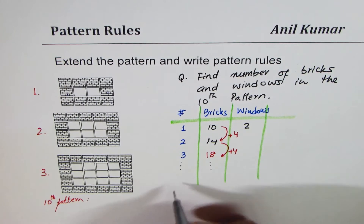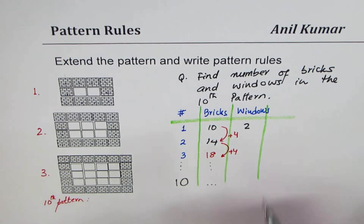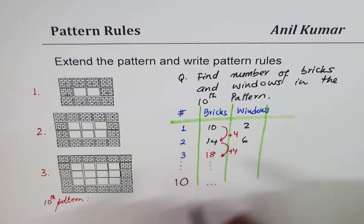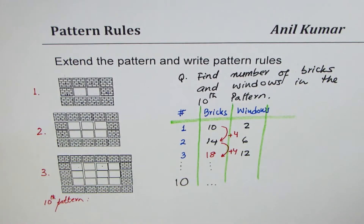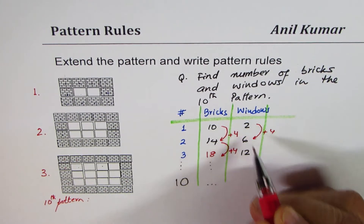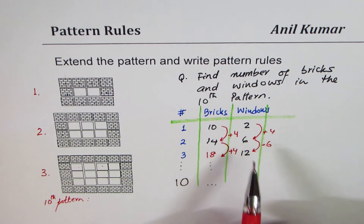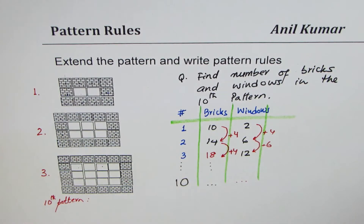If that is the pattern, then on the tenth pattern how many bricks do you expect? Meanwhile let me work on windows. In design one we have two windows, in design two we have six windows — one, two, three, four, five, six — and in design three we have twelve windows: four times three is twelve. So windows increased by four, then by six — these are different, so the two patterns follow different kinds of rules. What should be the number of windows in the tenth pattern?